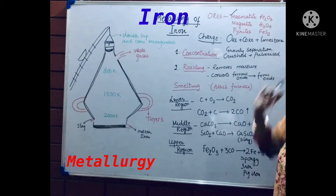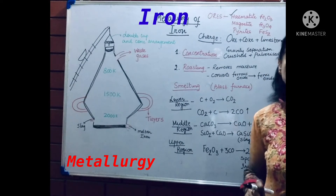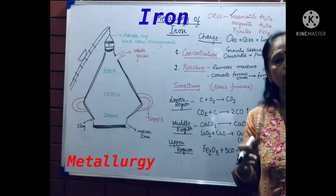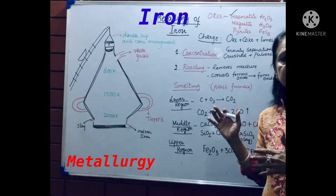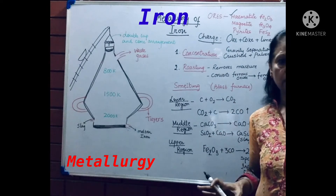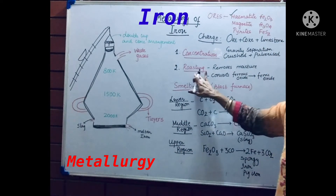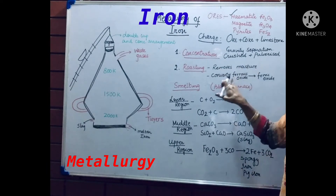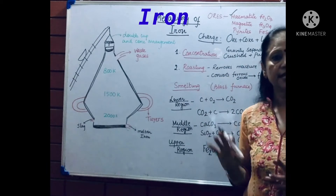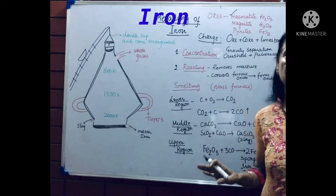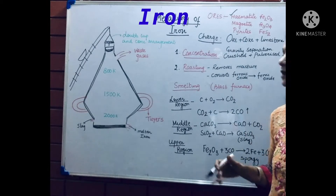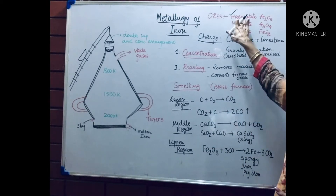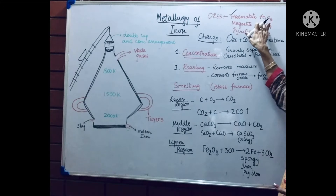Now the ore is already in the form of its oxide, so roasting is not needed to convert it. However, roasting removes moisture and also converts any ferrous compounds — ferrous oxide — present in it into ferric oxide, because hematite is ferric oxide.